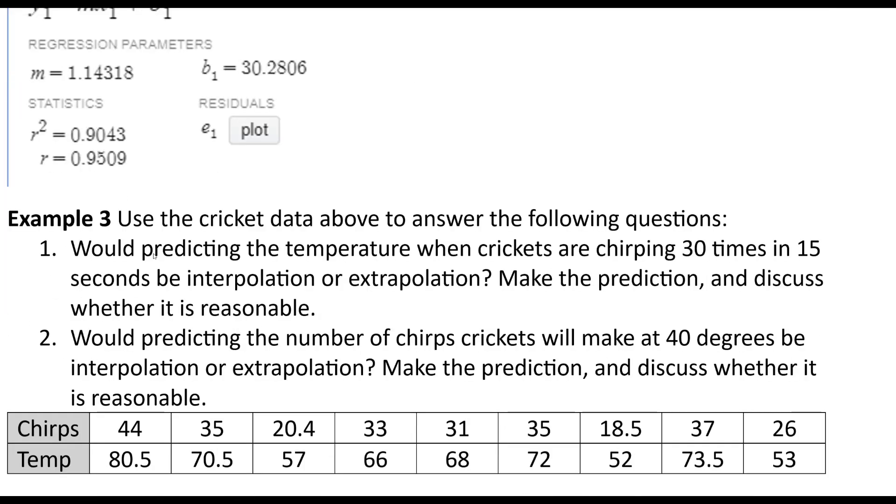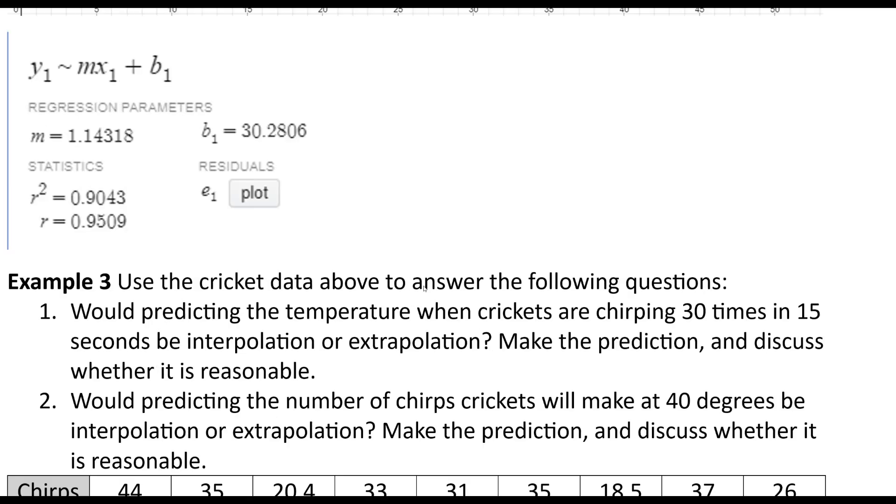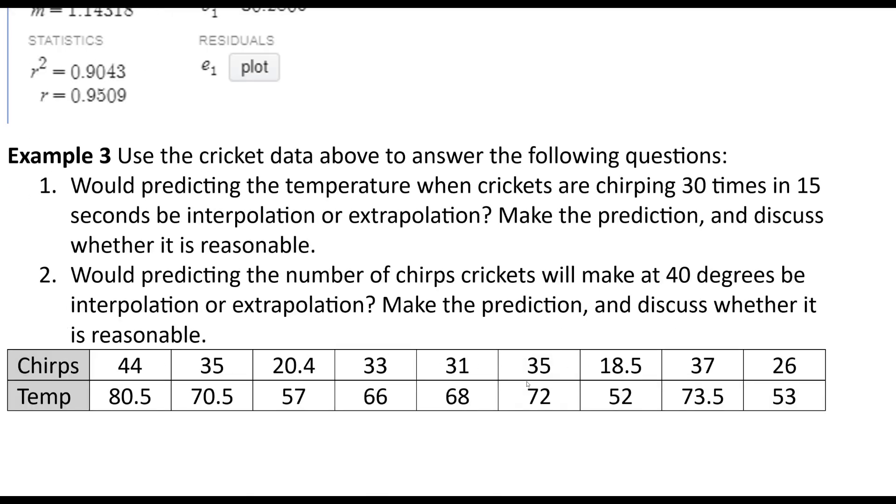So it says, use the cricket data above to answer the following questions. Would predicting the temperature outside when crickets are chirping 30 times in 15 seconds be interpolation or extrapolation? So if we're doing 30 times in 15, 30 is within our range of data, our domain of data. So that'd be something this data could lead to. So that'd be interpolation.